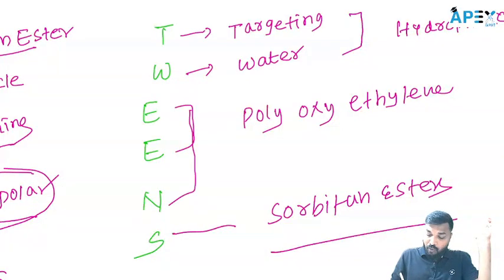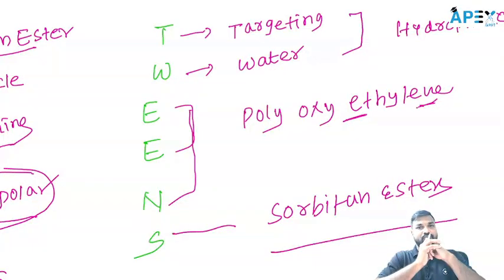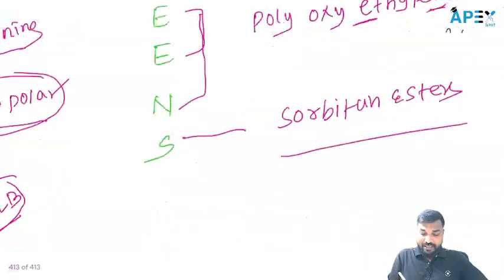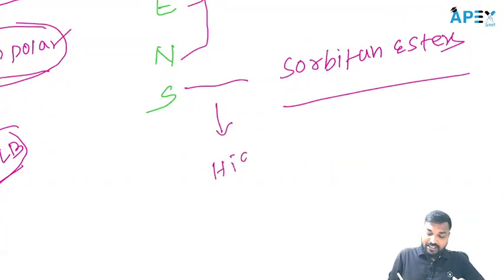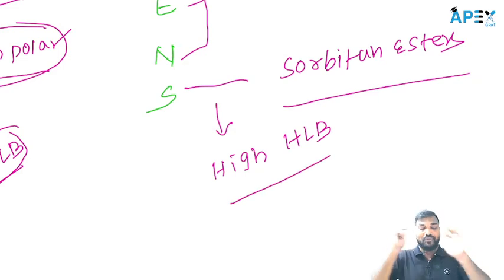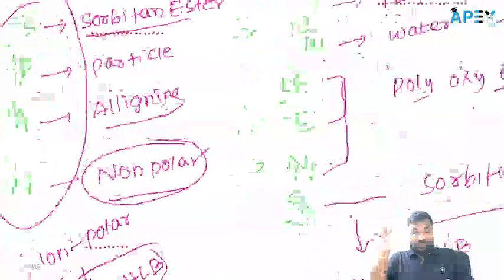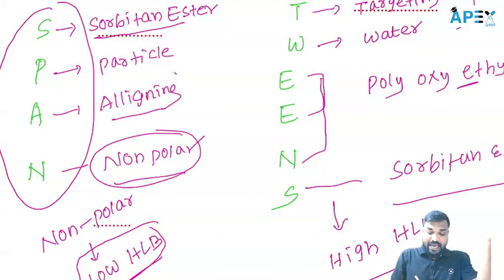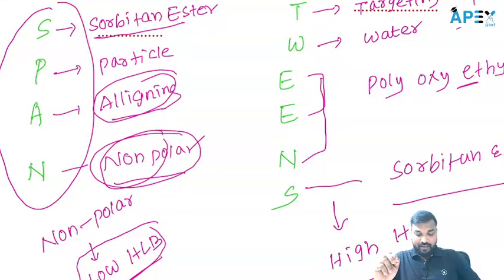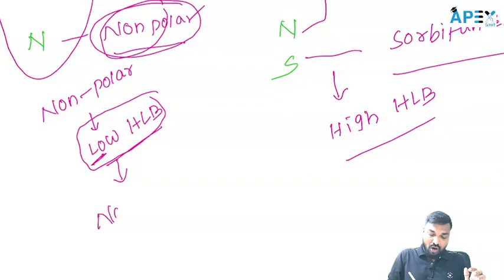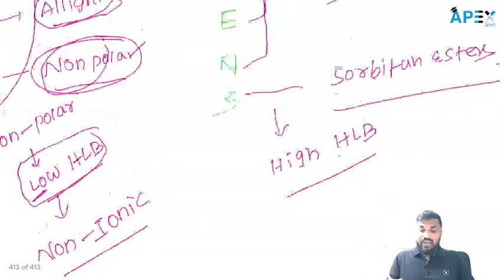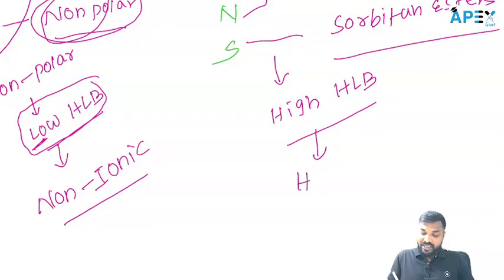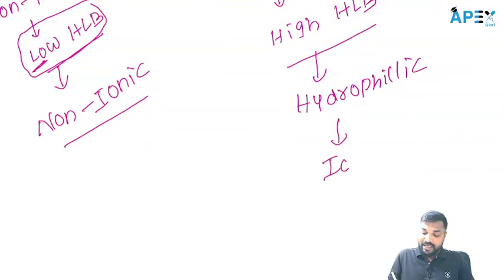Polyoxyethylene sorbiton esters — they are hydrophilic, so they have high HLB values. Spans and Tweens: Span — the first letter itself says sorbiton ester, aligning non-polar, low HLB, non-ionic. They are easily not ionized. Tweens are hydrophilic and they are ionized.